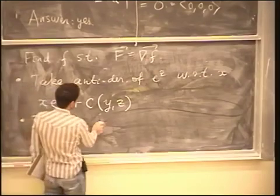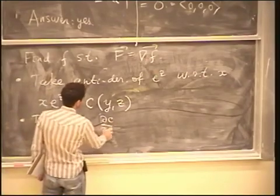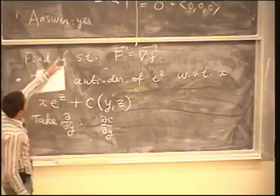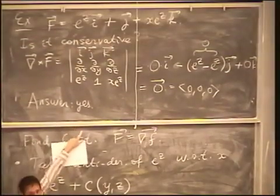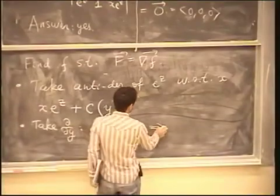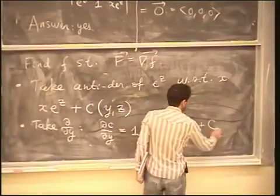Take d/dy. Well, this will be zero, and this will be dc/dy. We are supposed to get the second component of our vector field, which is one. Because see, I wrote, the second component is j. It means one times j. So this should be one. If this is one, it means that c is equal to y. Well, that's another constant. Let's call it c1.